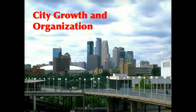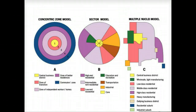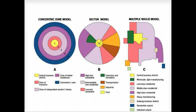This video is about city growth and organization. Today we're going to be focusing on the three models used most commonly by geographers to describe the growth of United States cities: the concentric zone model, also known as the Burgess model; the sector model, also known as the Hoyt model; and the multiple nuclei model, sometimes known as the Ullman or Harris-Ullman model. Most often you'll hear it called the multiple nuclei model. So let's get started.